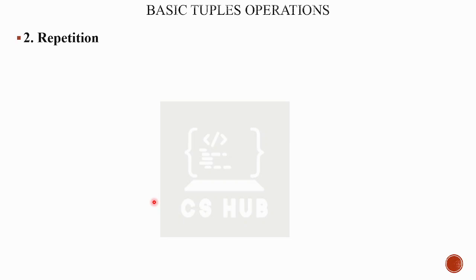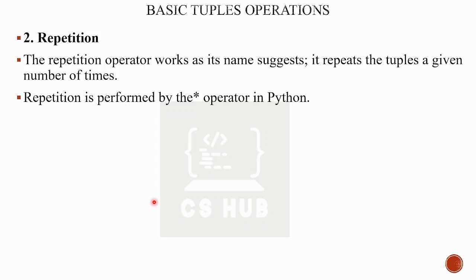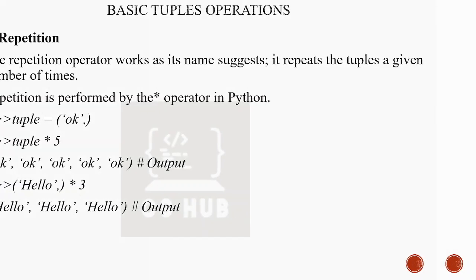Next is repetition — repeating the same tuple a number of times using the star operator. For example, if tuple = ('okay',) — a single element tuple — and we do tuple * 5, it repeats 'okay' five times. Similarly, 'hello' * 3 gives 'hello' three times.